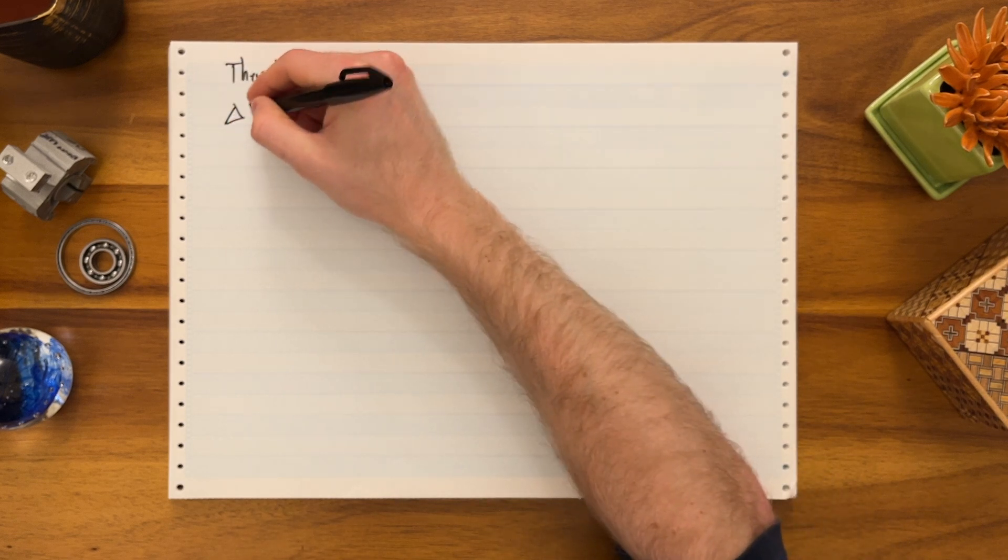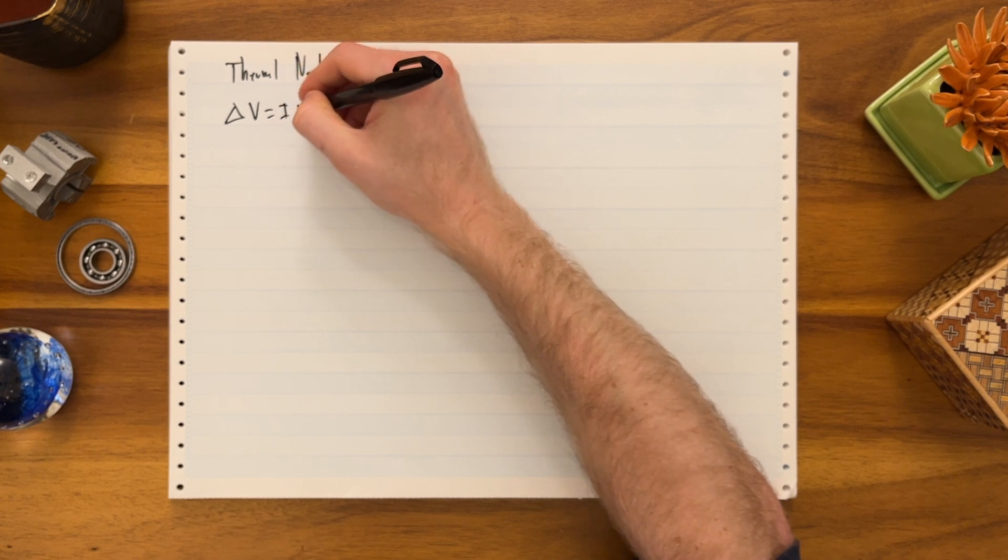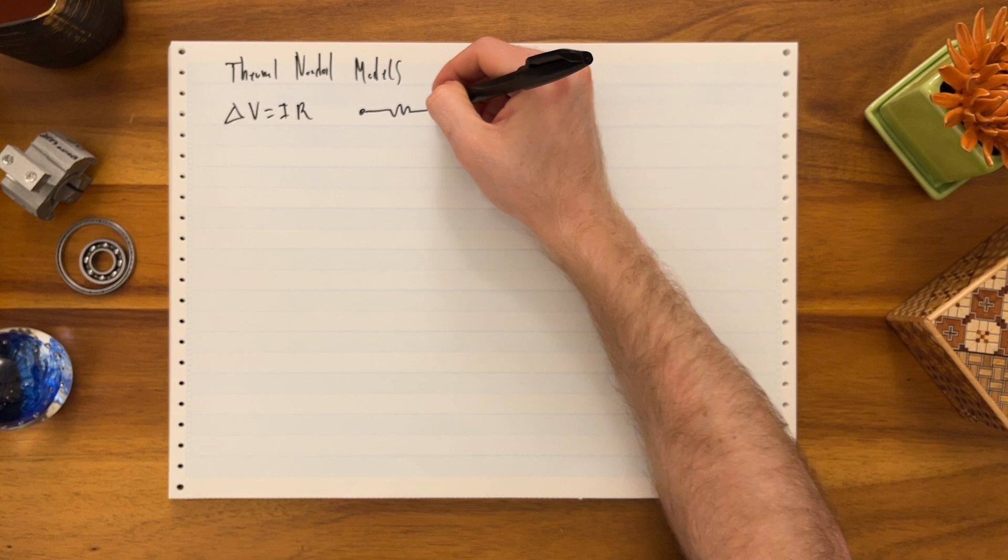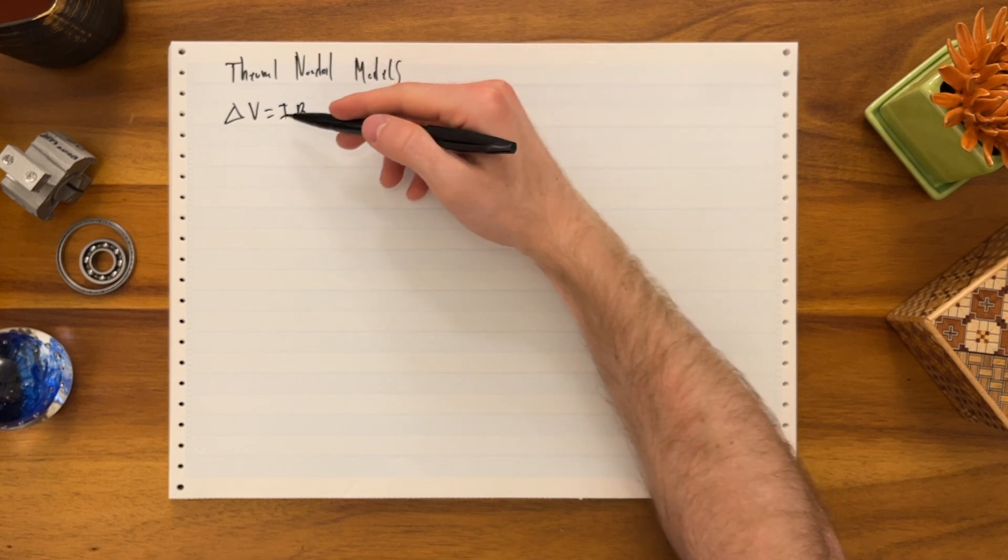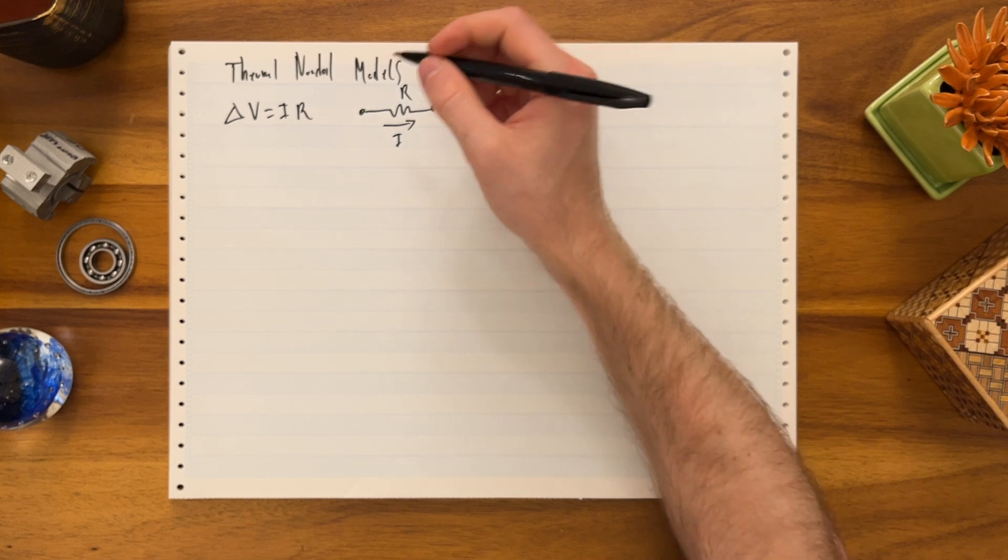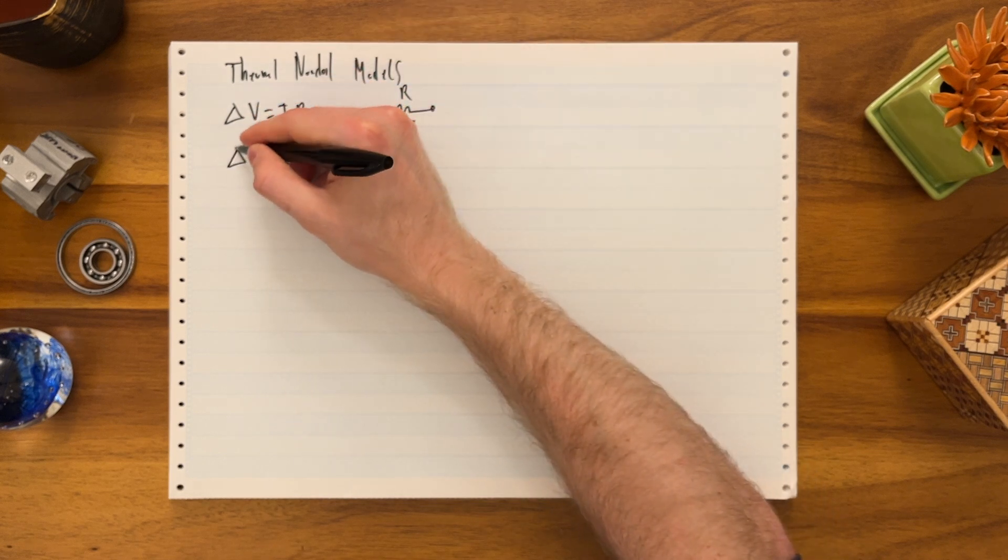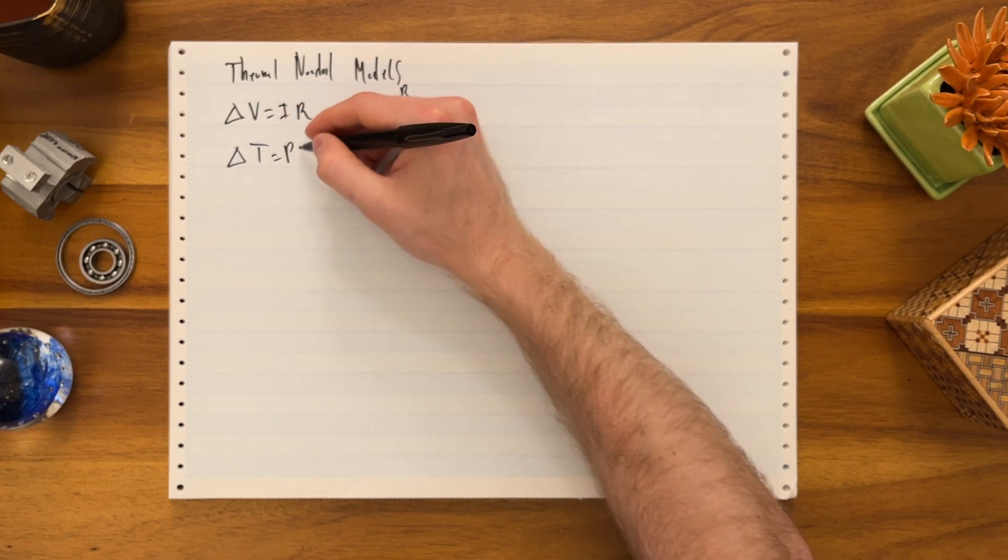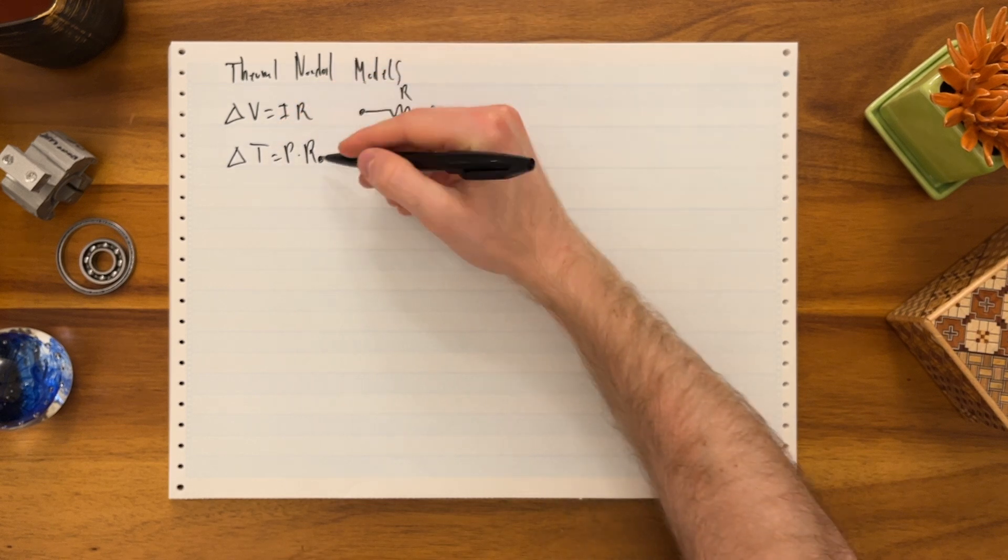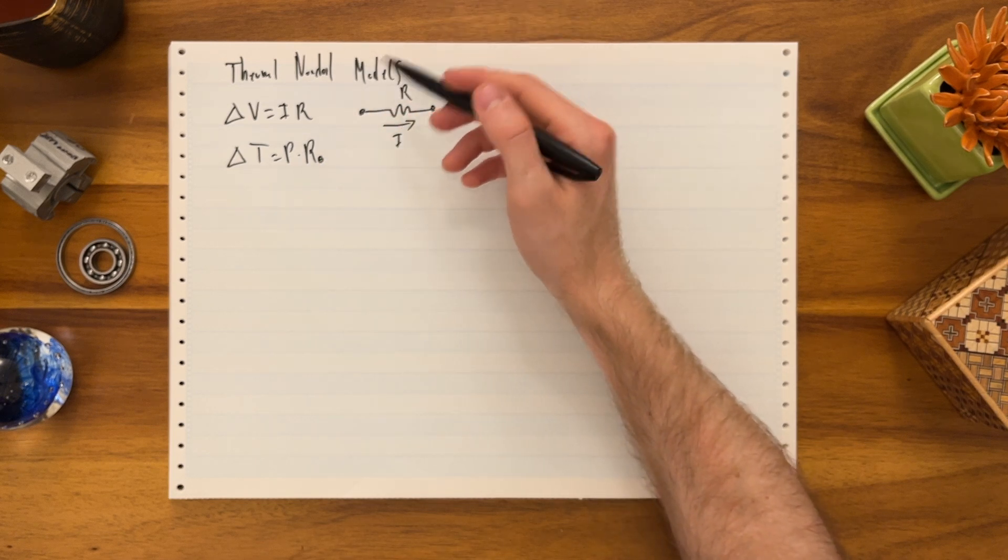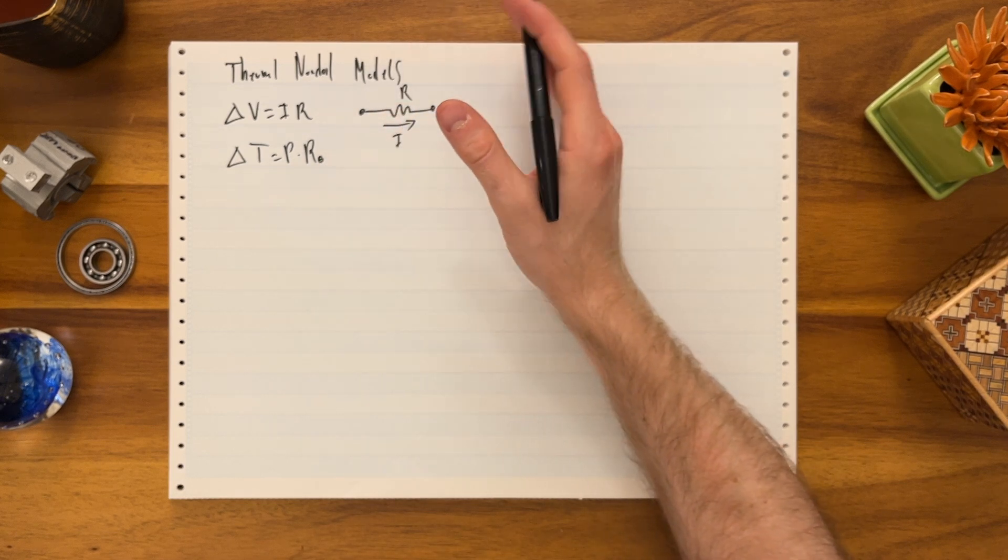So in an electrical circuit, we might have delta V equals IR across a resistor. That says the change in voltage across the resistor is related to the current flowing through it and the resistance. And in a thermal circuit, we say something very similar: the change in temperature across a resistance is the power times the thermal resistance, R_theta. I'm going to be dropping the thetas for the rest of this, but if you're talking to EEs, they want to see the theta because they don't understand thermal resistance.